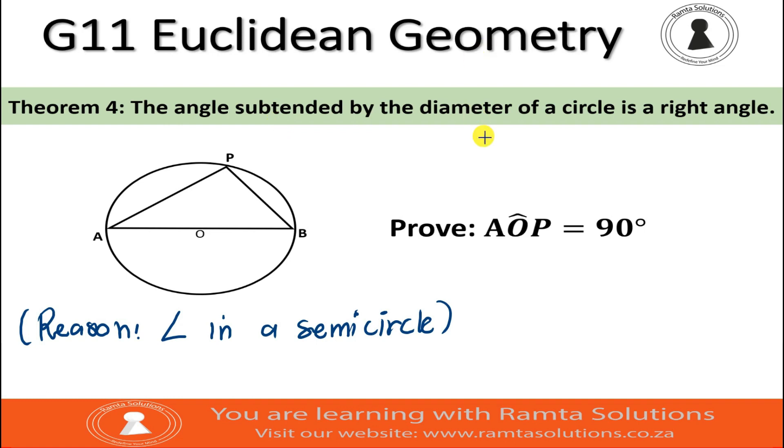So we need to prove that angle AOP is 90 degrees. Now, this is a mistake. It should be saying we must prove that angle APB. Angle APB is equal to 90 degrees.